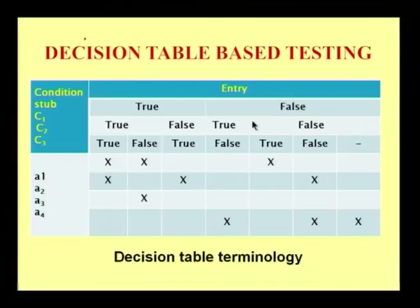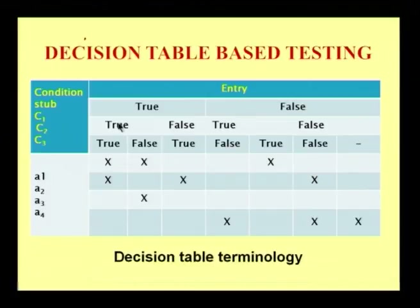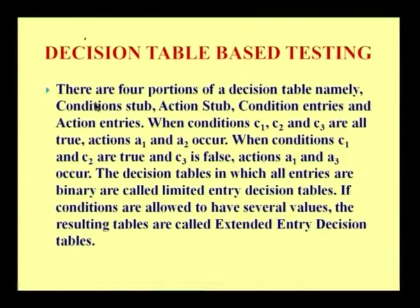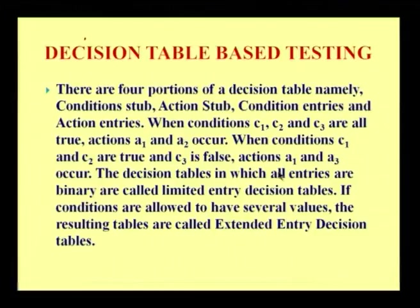This is basically referred to as a confusion matrix. The various set of actions which are considered as part of these specific conditions are taken out as A1, A2, A3, A4, and the corresponding cross would indicate whether this comes under that particular condition or not. There are four portions of a decision table: condition stub, action stub, condition entry, and action entry. When conditions C1, C2, and C3 are all true, actions A1 and A2 occur. When C1 and C2 are true and C3 is false, actions A1 and A3 occur. Decision tables in which all entries are binary are called limited entry decision tables; if conditions are allowed to have several values, the resulting tables are called extended entry decision tables.